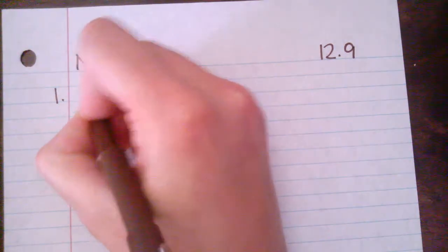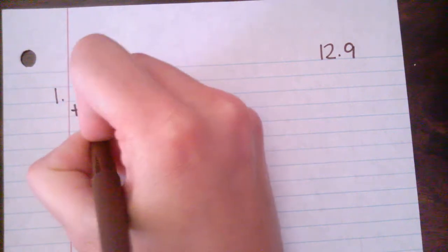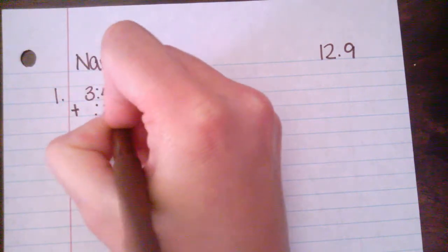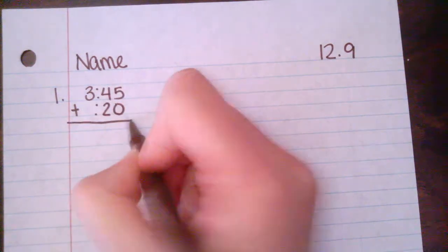Molly started her piano lesson at 3:45. The lesson lasted 20 minutes, so we have our 3:45 plus our 20 minutes. So we can add that.